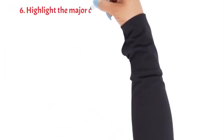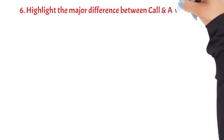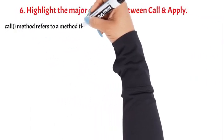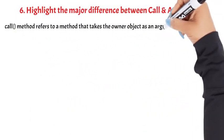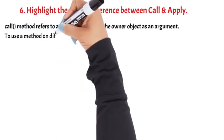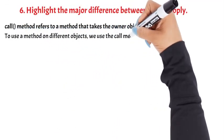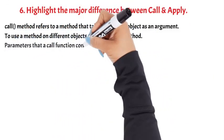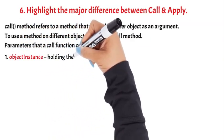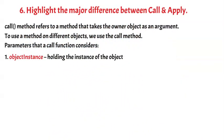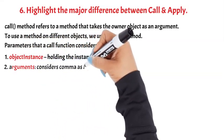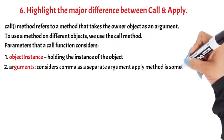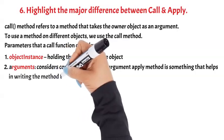Question 6: Highlight the major difference between call and apply. Call method refers to a method that takes the owner object as an argument. To use a method on different objects, we use the call method. Parameters that a call function considers: 1. Object instance, holding the instance of the object. 2. Arguments. It considers comma as a separate argument.